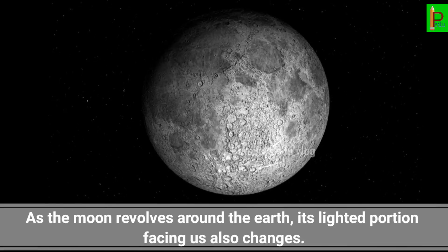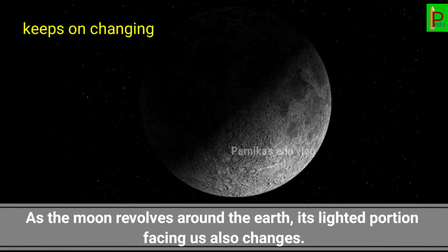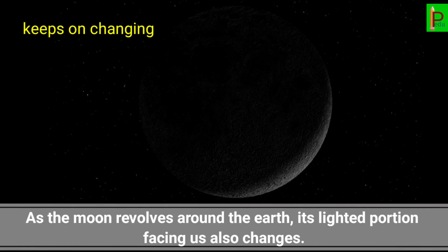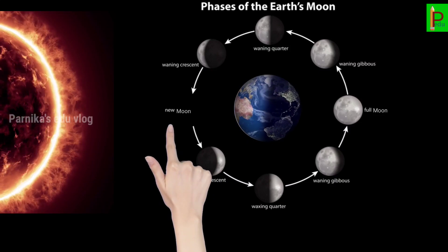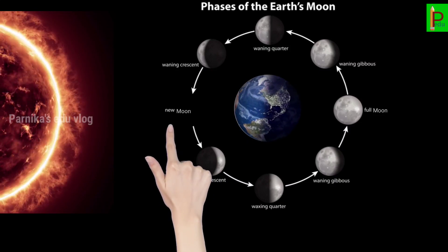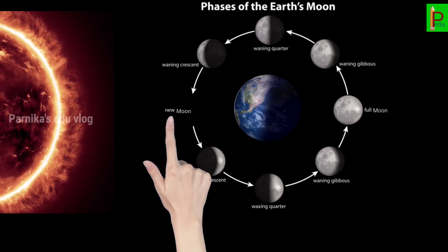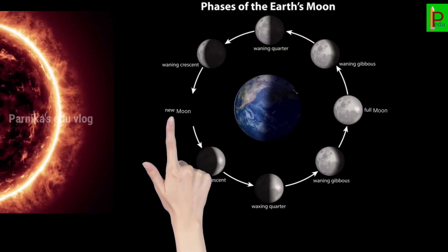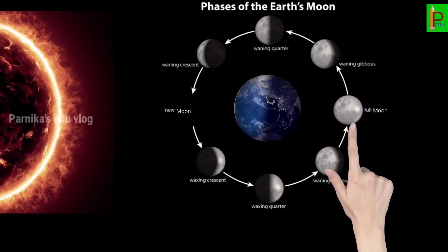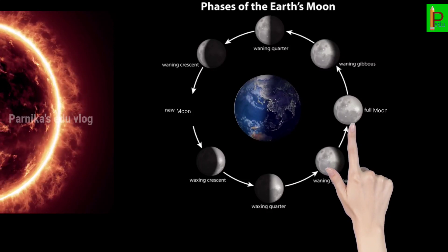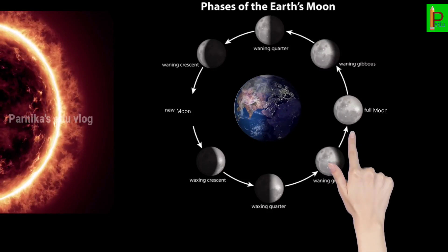That is why the shape of the Moon as seen by us keeps on changing. When the Moon is between the Earth and the Sun, we cannot see its lighted portion at all — this is the new moon. When the Moon is on the opposite side, we can see the full lighted surface — this is the full moon.